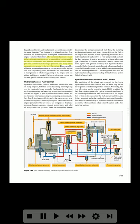The fuel control can sense many different inputs, such as power lever position, engine RPM for each spool, compressor inlet pressure and temperature, burner pressure, compressor discharge pressure, and many more parameters as needed by the specific engine. These variables affect the amount of thrust that an engine produces for a given fuel flow. By sensing these parameters, the fuel control has a clear picture of what is happening in the engine and can adjust fuel flow as needed.